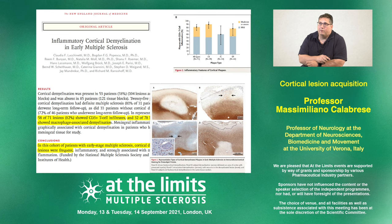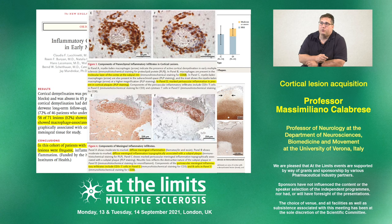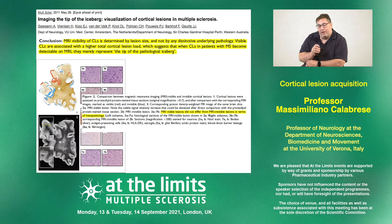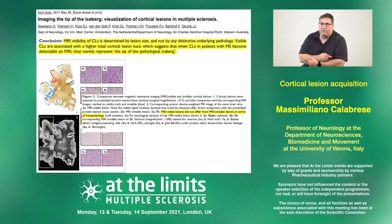A seminal paper by Claudia Lucchinetti and colleagues published in the New England Journal of Medicine confirmed in vivo the presence of these lymphoid structures and this meningeal inflammation. However, especially subpial lesions are very difficult to visualize by MRI. A paper from the Amsterdam group definitively showed that even with the newest MRI sequences, the number of cortical lesions we can visualize in vivo is only a small part of the whole picture — we are probably visualizing just the tip of the iceberg.